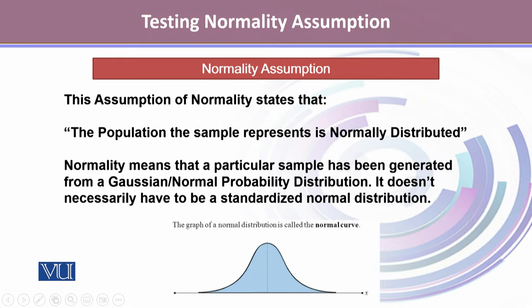The normality assumption states that the population the sample represents is normally distributed. Normality means that a particular sample has been generated from a Gaussian or the normal probability distribution, which does not necessarily have to be the standardized normal probability distribution. We understand that the normal distribution shows a very perfect normal curve, also famously known as a bell curve.